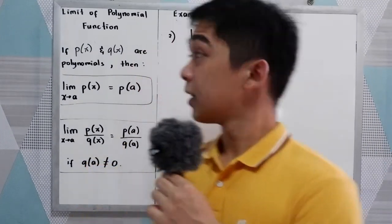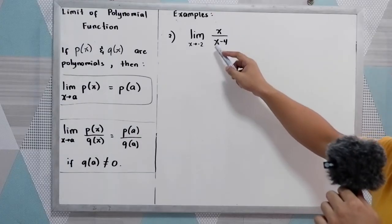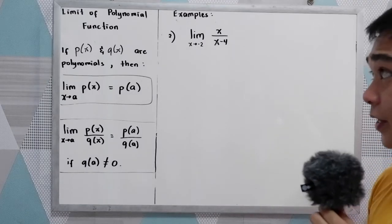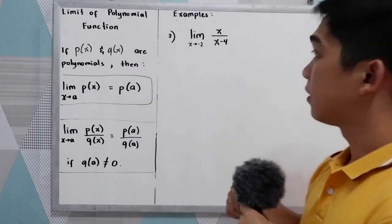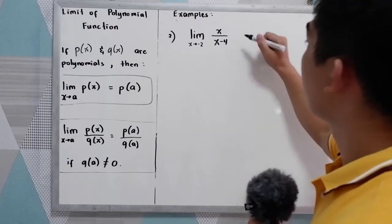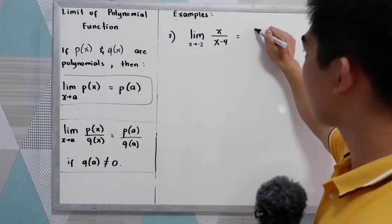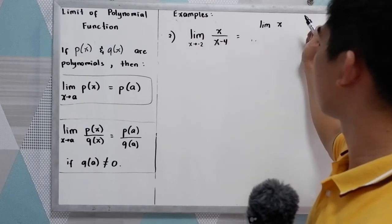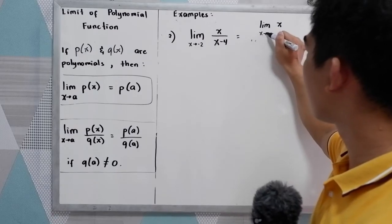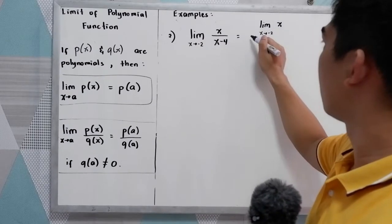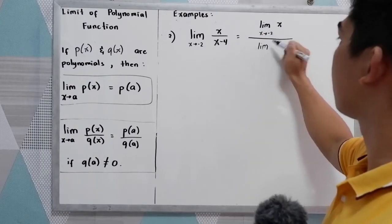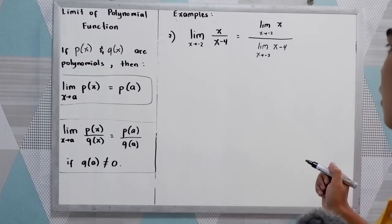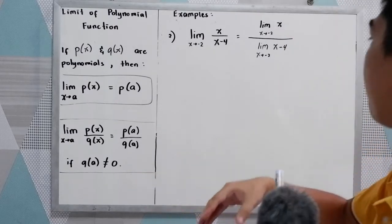Now our second example: the limit of X over X minus 4 as X approaches negative 2. Let's first apply the limit of polynomial functions, then check our answer using the previous theorems. We apply the quotient rule: that is the limit of X as X approaches negative 2, divided by the limit of X minus 4 as X approaches negative 2.